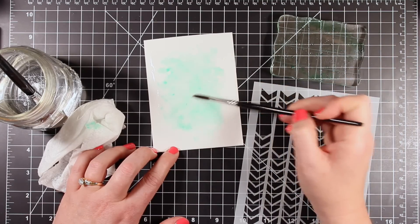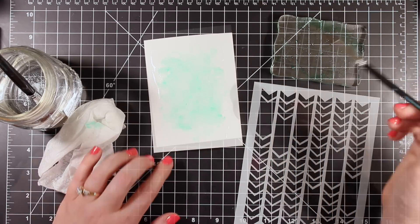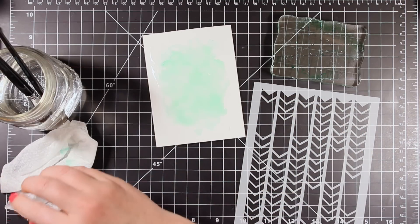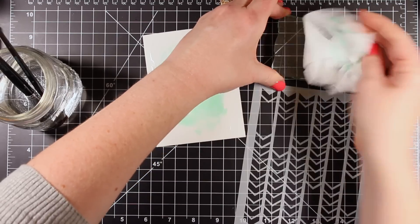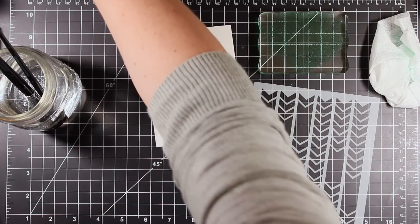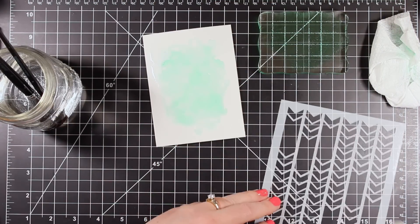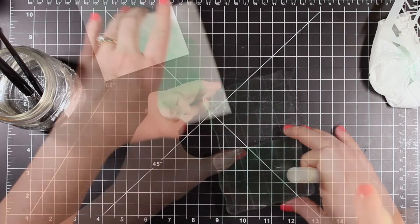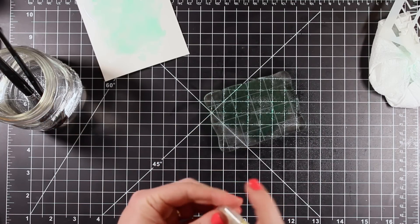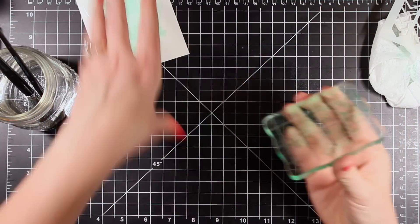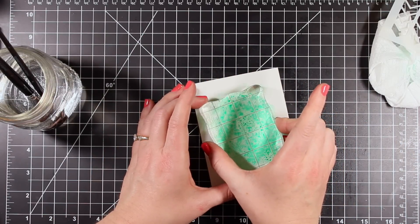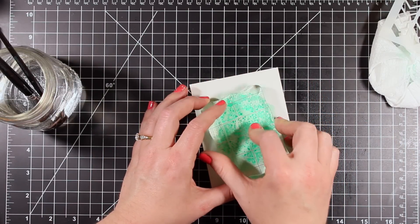The cool thing about Distress Ink is that you can really layer the colors. Once I get this kind of where I want it, I'm going to heat set it so it doesn't keep moving around. I'm going to clean my block and then I'm going to smush some more color on. I've added some more color to my acrylic block and I'm going to spritz it with just some plain water. I'm just building up the intensity of the color, and I thought this would be a quicker way than re-watercoloring the whole thing.